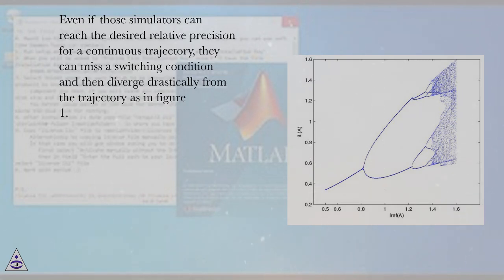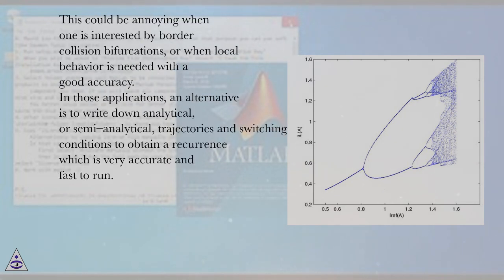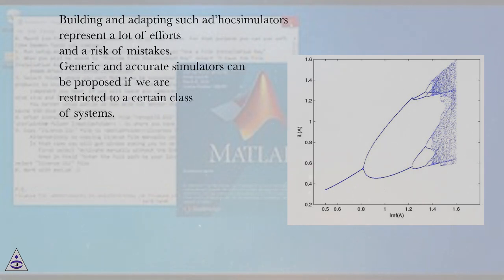Even if those simulators can reach the desired relative precision for a continuous trajectory, they can miss a switching condition and then diverge drastically from the trajectory as in figure 1. This could be annoying when one is interested by border collision bifurcations, or when local behavior is needed with good accuracy. In those applications, an alternative is to write down analytical or semi-analytical trajectories and switching conditions to obtain a recurrence which is very accurate and fast to run. Building and adapting such ad hoc simulators represent a lot of efforts and a risk of mistakes.